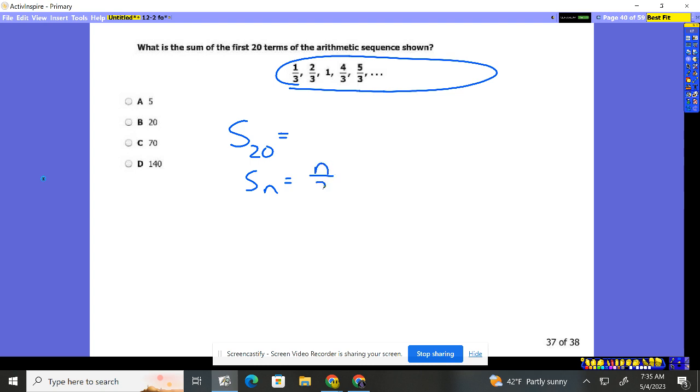It says n divided by two. So what is n in this case? It's going to be 20. And then it says two times your first value plus n minus one times d. I believe that's our formula.